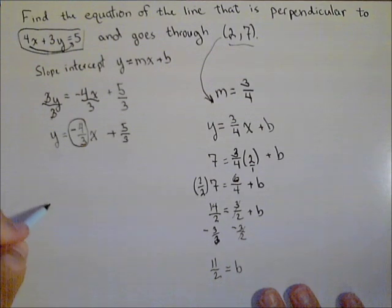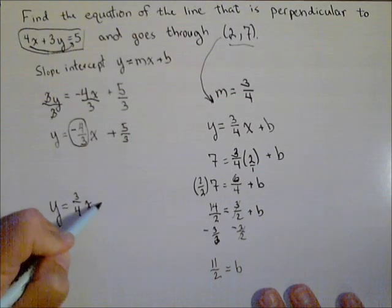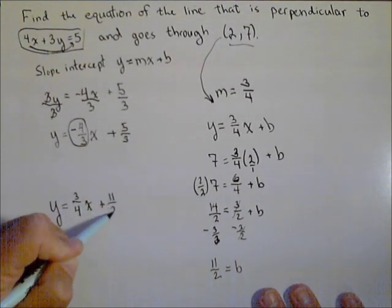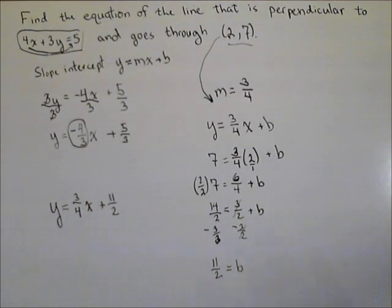So our equation in slope-intercept form is y equals 3 fourths x plus 11 halves. And we're done.